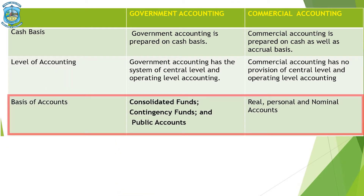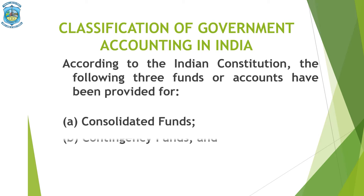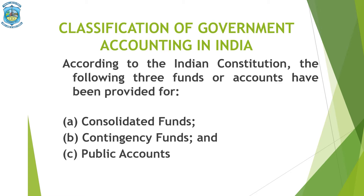Regarding the Basis of Accounts: in Commercial Accounting there were three accounts — Real, Personal and Nominal — and accordingly we had rules for journalizing, ledger and preparation of financial statements. But in Government Accounting, it is divided into three: the first one is the Consolidated Funds, the second one is the Contingency Funds, and the third one is the Public Accounts. These are the three accounts that have to be prepared for Government Accounting.